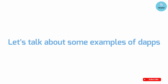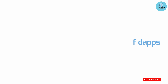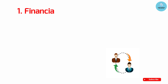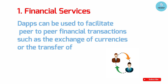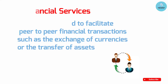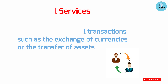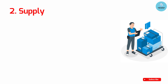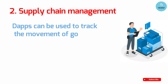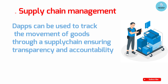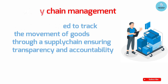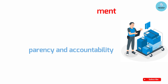Let's talk about some examples of dApps. First, financial services: dApps can be used to facilitate peer-to-peer financial transactions such as the exchange of currencies or the transfer of assets. Second, supply chain management: dApps can be used to track the movement of goods through a supply chain, ensuring transparency and accountability.